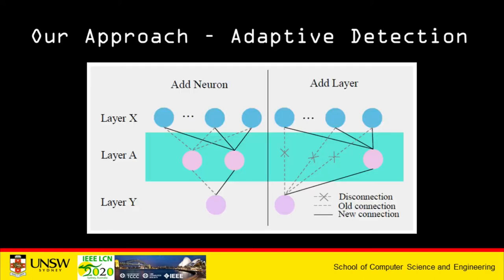The adaptive detection as proposed by our framework comprises neural networks that are capable of changing dynamically. As you can see on the left-hand side of the figure, we show how new neurons are added, and on the right-hand side we show how new layers are added into the network — so we have organizations, disconnections, and new connections.